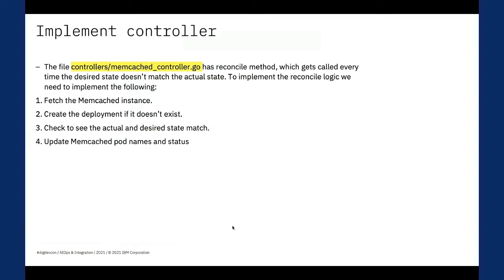The next step is to implement the controller. The file generated by Operator SDK inside the controllers folder — memcached_controller.go — has a Reconcile method. The Reconcile method gets called every time the desired state doesn't match the actual state. To implement the reconcile logic, we need to: get the Memcached instance, create the deployment if it doesn't exist, deploy the Memcached image into the cluster, make sure the actual and desired states match, and update the Memcached pod names with their status.